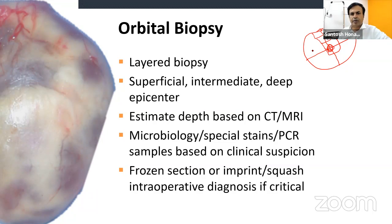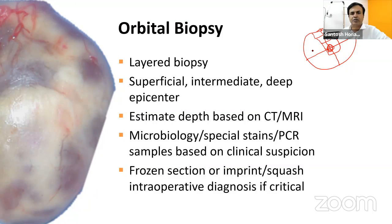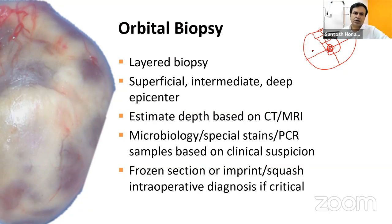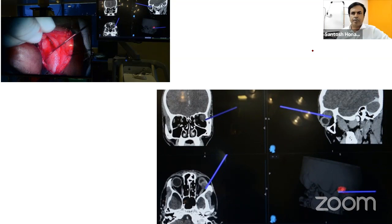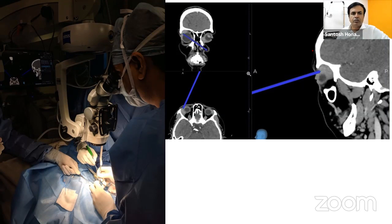Depth is estimated by CT or MRI. When sending a biopsy specimen, always send for both histopathology and microbiology. Keep additional fresh tissue for special stains and PCR — if tuberculosis is suspected and all tissue has been used for formalin fixation, there won't be enough for PCR. Whenever there is doubt, perform frozen section or imprint/squash intraoperative diagnosis. If uncertain whether you've reached the representative part of the tumor, use intraoperative navigation.